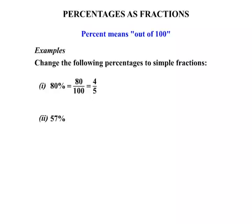Example 2: 57%. Well, again, because it's a percentage, it means out of 100. Now that's 57 over 100. Using the calculator, 57, then the ABC, the over button, 100.